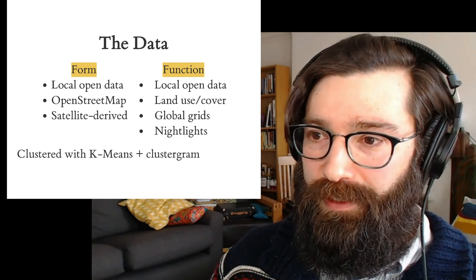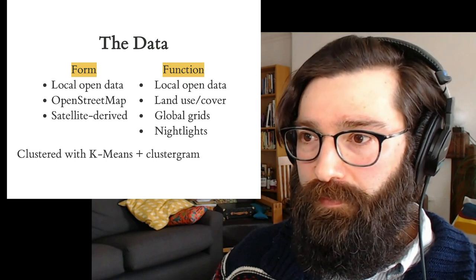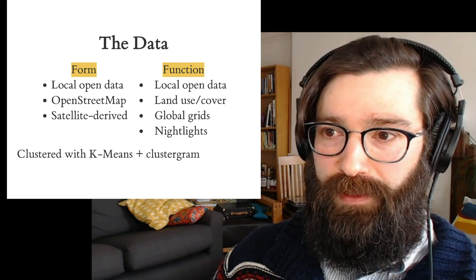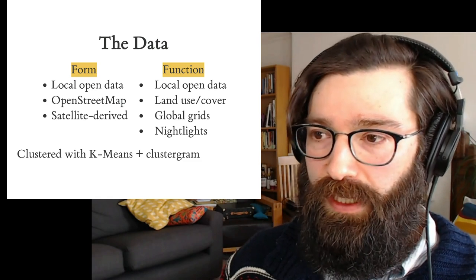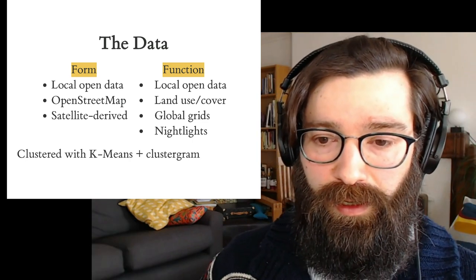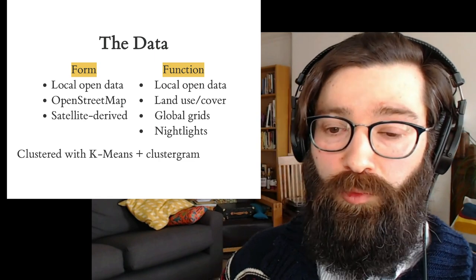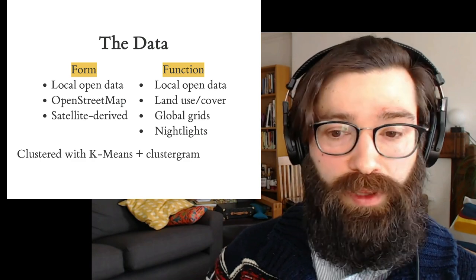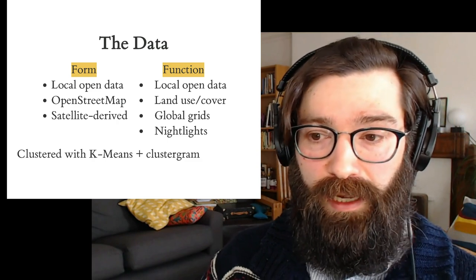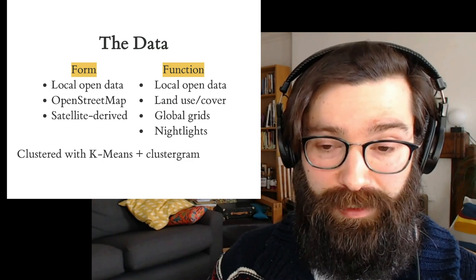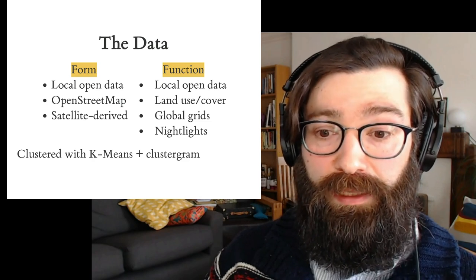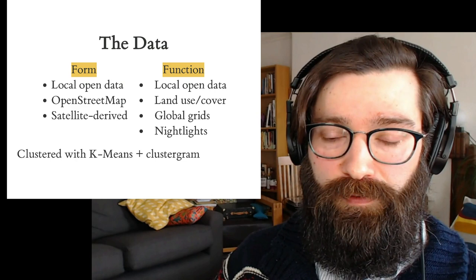We bring all these layers together and run a k-means clustering algorithm. We pick the number of clusters per city individually rather than doing one global clustering exercise, because the number of clusters we find most suitable through clustergram visualizations already tells us something about the nature of signatures in that city.